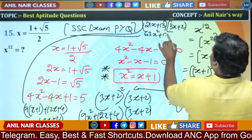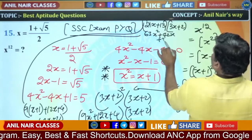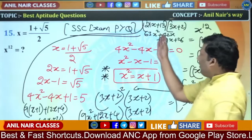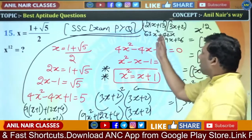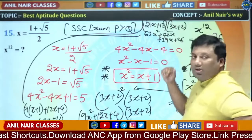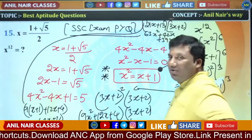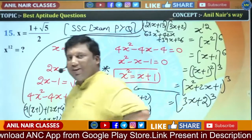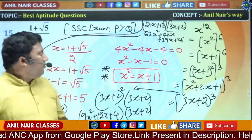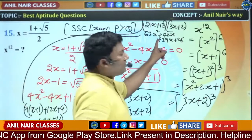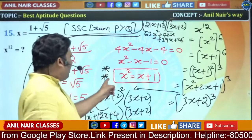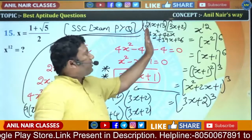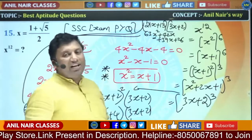Expanding: 63X² + 42X + 39X + 26. Wherever X² appears, substitute X + 1. So 63(X+1) + 81X + 27. You will get the value in terms of a linear expression. Wherever X remains, substitute (1 + √5) / 2.